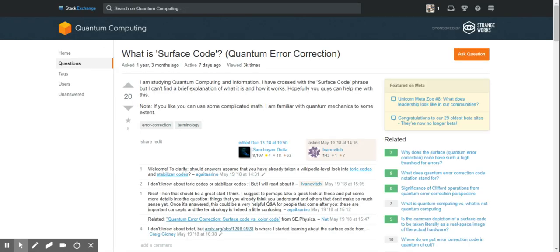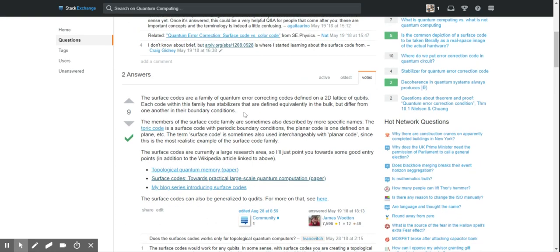I am studying quantum computing information. I have come across the surface code phrase but I can't find a brief explanation of what it is and how it works. The surface codes are a family of quantum error correcting codes defined on a two-dimensional lattice of qubits. Each code within this family has stabilizers that are defined equivalently in the bulk but differ from one another in their boundary conditions. The toric code is a surface code with periodic boundary conditions.